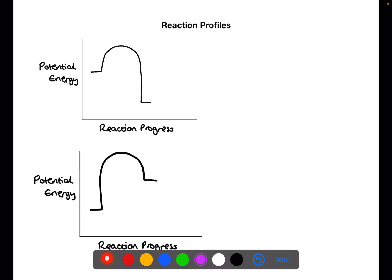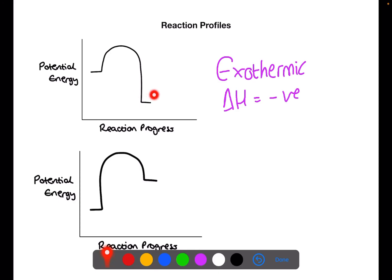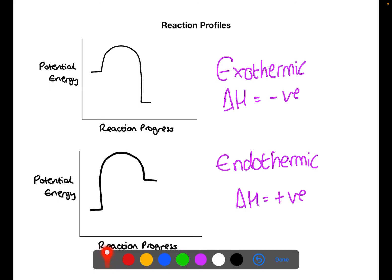Here we can see two different types of reaction profiles. This first one is for an exothermic reaction, where energy is released, so delta H is a negative value. You can see that the products' enthalpy is lower than the reactants', so products minus reactants gives a negative value. The second represents an endothermic reaction, where energy is taken in from the surroundings, giving a positive delta H — the products have a higher value than the reactants.